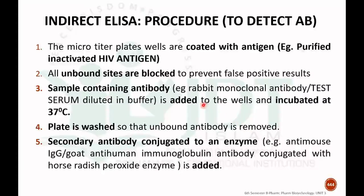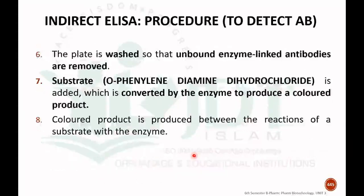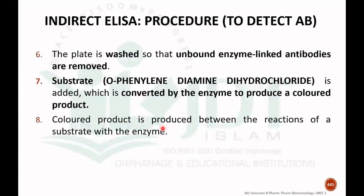After washing to remove any unbound antibody, a secondary antibody conjugated to an enzyme — such as goat anti-human immunoglobulin conjugated with horseradish peroxidase — is added. The plate is again washed to remove unbound enzyme-linked antibodies. Then a coloring substance such as ortho-phenylenediamine dihydrochloride is added, which is converted by the enzyme to produce a colored compound. If color is produced, it indicates the presence of that antibody in the sample.